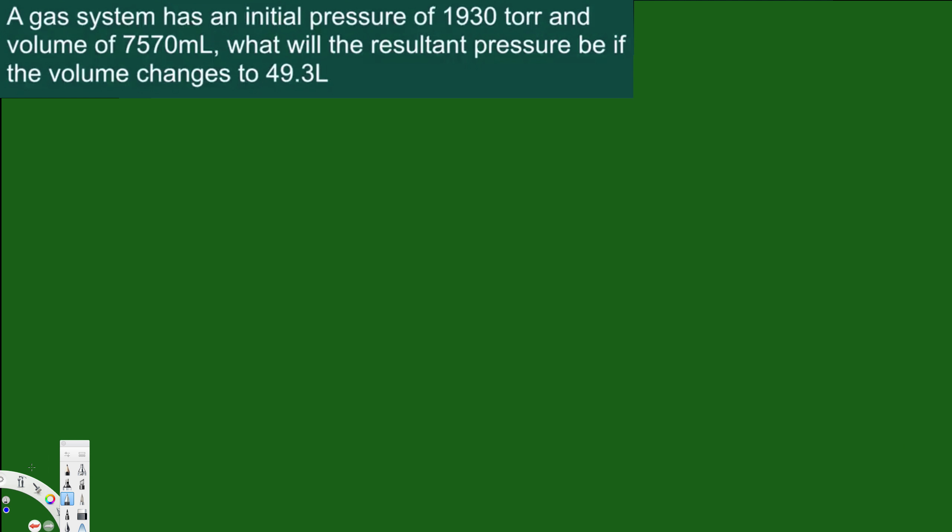Hey, what's going on guys? Let's do this problem right here. The question is asking: a gas system has an initial pressure of 1930 torr and volume of 7,570 milliliters. What will the resultant pressure be if the volume changes to 49.3 liters?